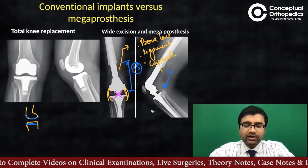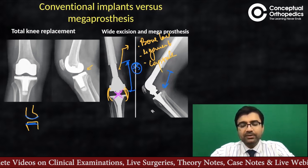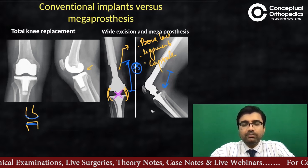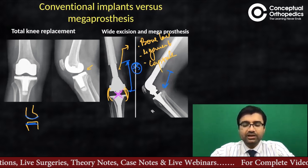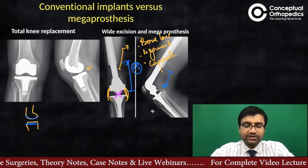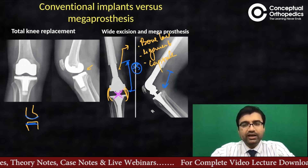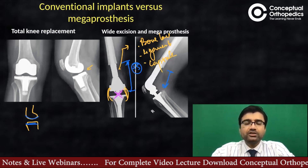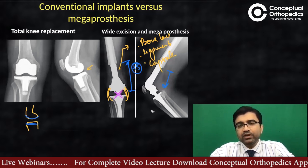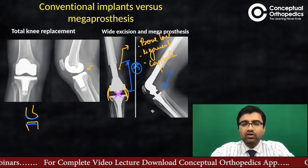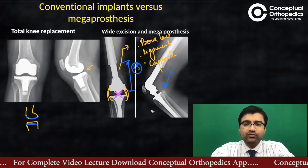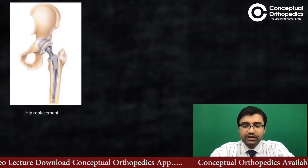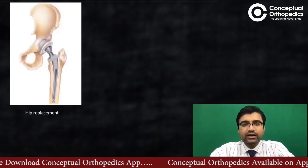With a conventional implant, it may not be possible to restore function after resection when all these critical structures are lost. There is a spectrum of implants: tumor prostheses are at one end. In between, you may have ligament-sparing or ligament-enhancing implants and semi-constrained implants, and then finally the constrained implants.